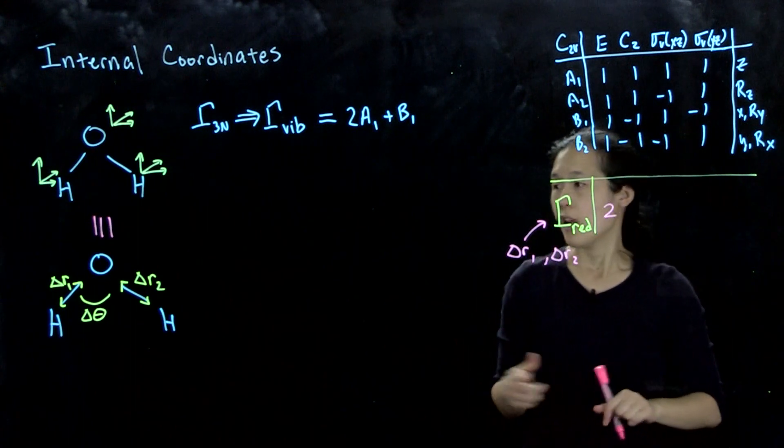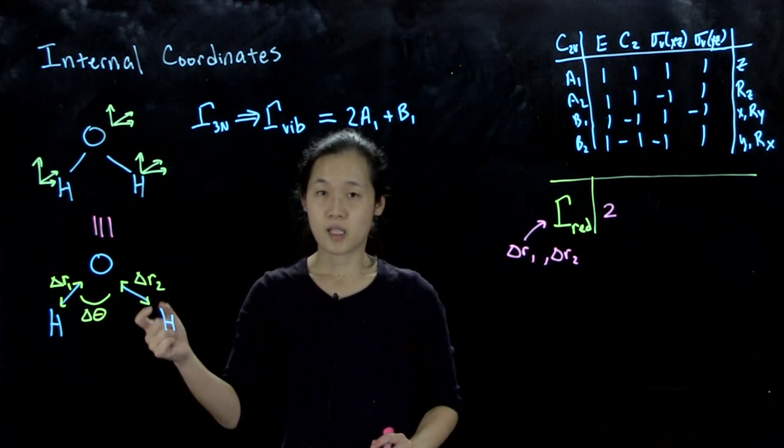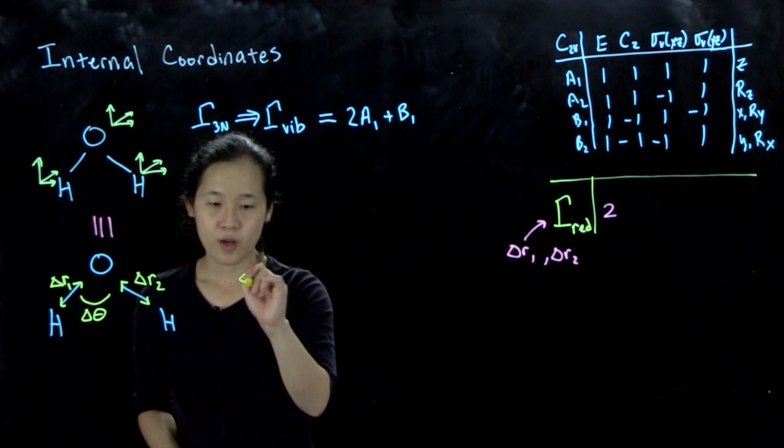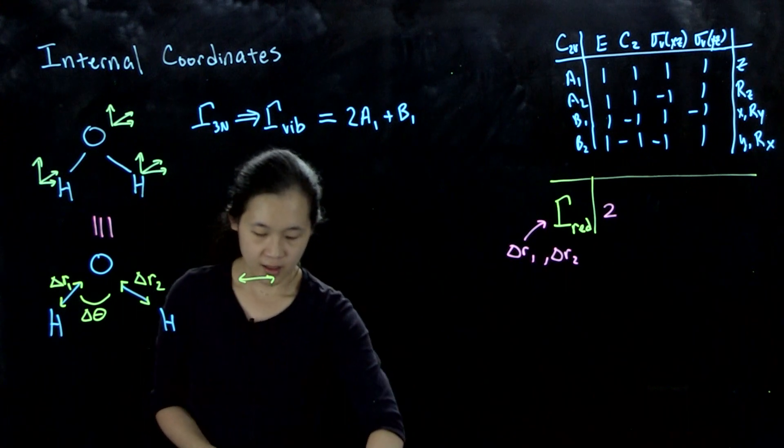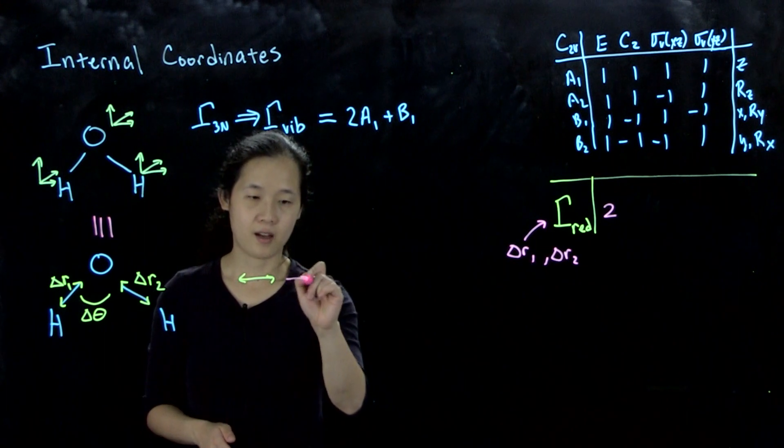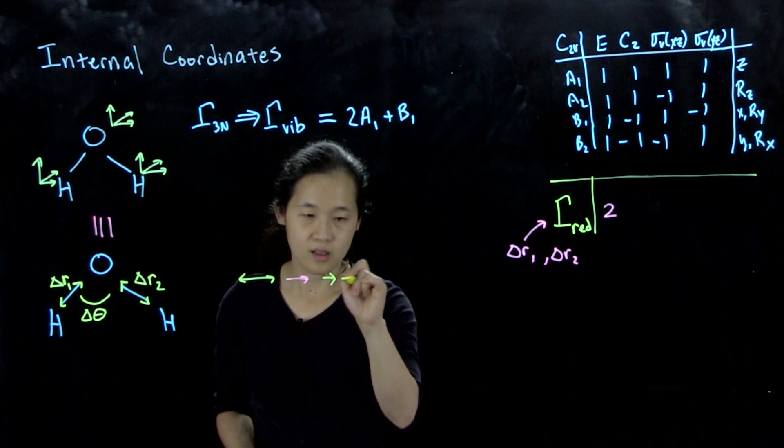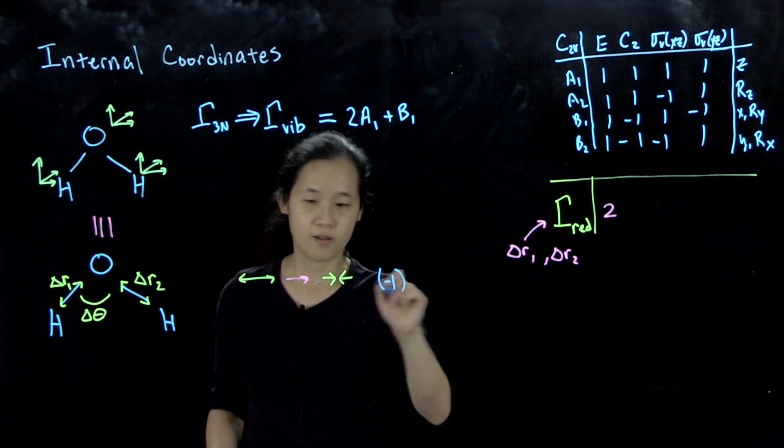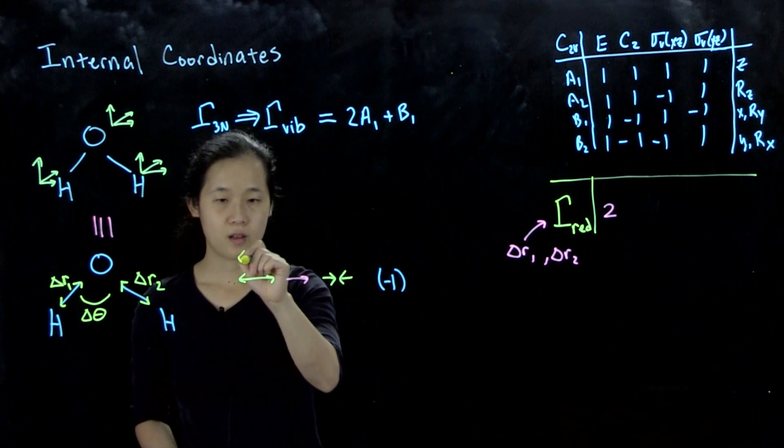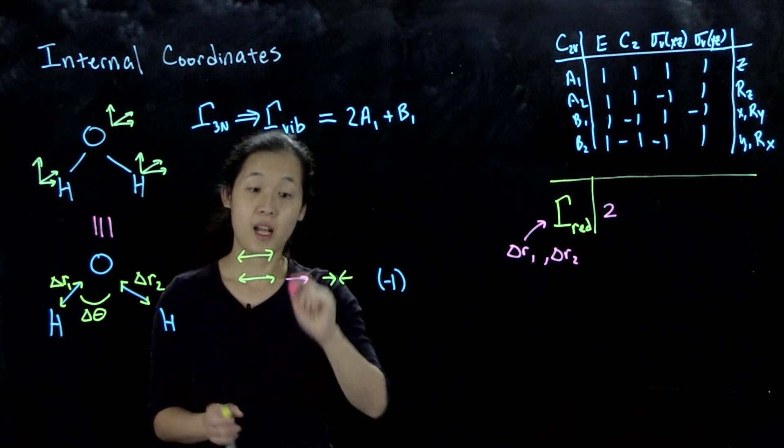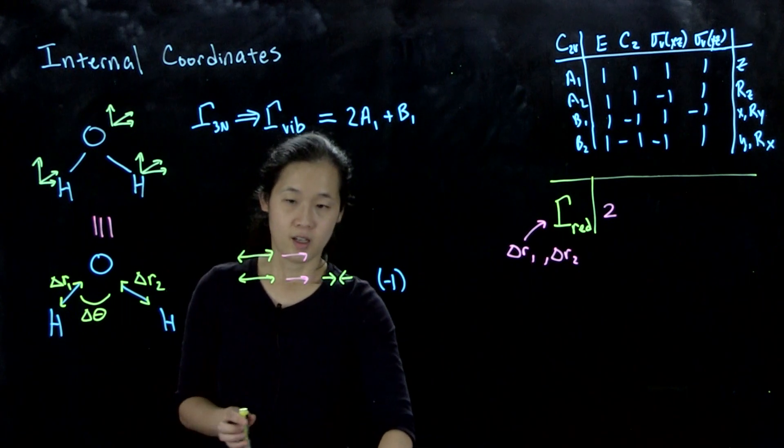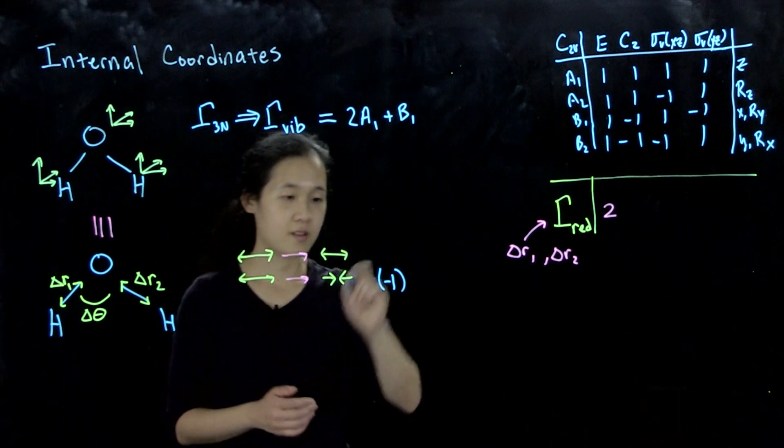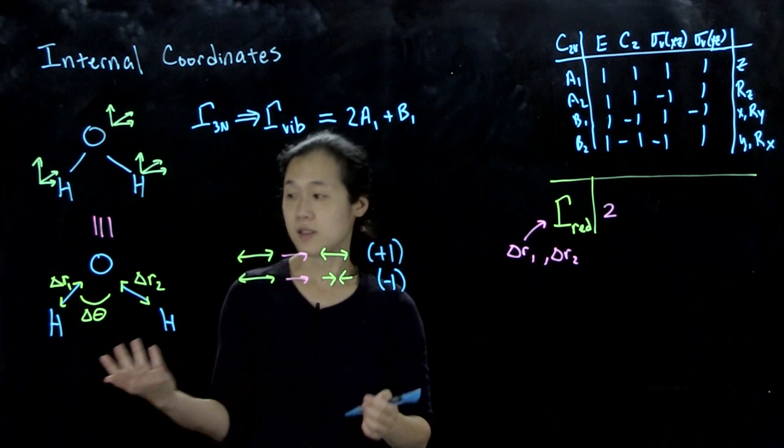We're doing the same treatment where if it moves position, it's a 0. If it changes direction, it's minus 1. What I mean is, if your bond elongation under your symmetry operation somehow becomes a bond compression, this would be a minus 1. But if it stays the same in the same position, as in the atoms don't move, then this would be a plus 1. And if it moves, it's a 0.